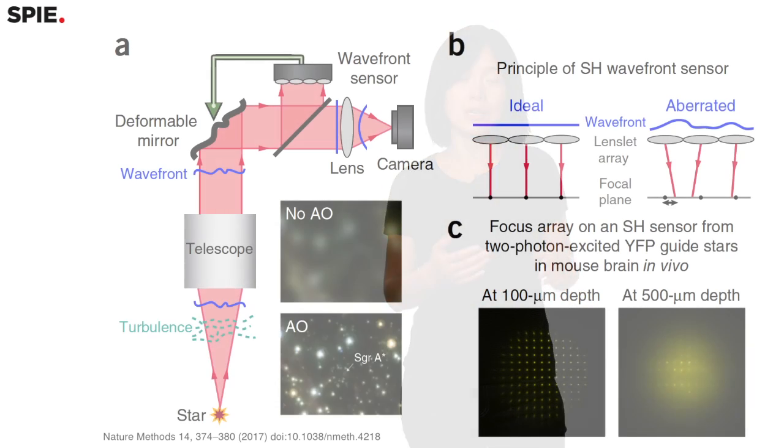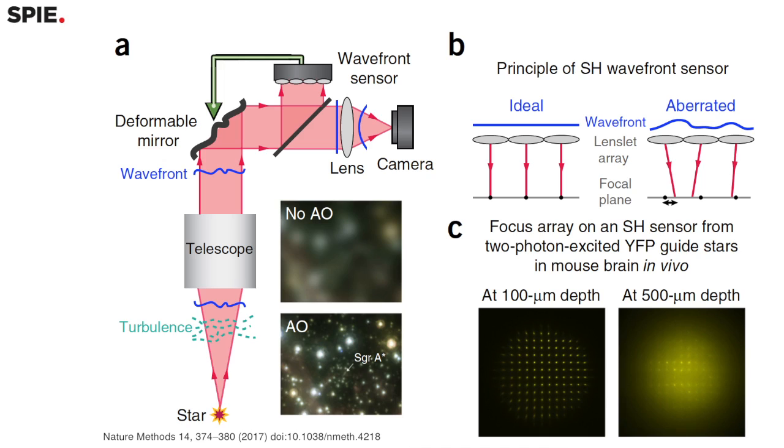Adaptive optics is an approach that has been used for many years by astronomers when they try to image stars through the atmosphere using a telescope based on Earth. The problem is that when starlight passes through the atmosphere, the wavefront of the light is distorted because the air masses there have different temperatures and different humidity, resulting in different refractive indices. So the wavefront gets distorted and cannot form a very sharp image of the star on the telescope.